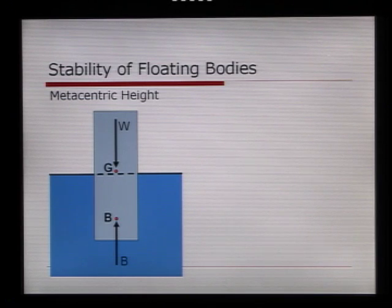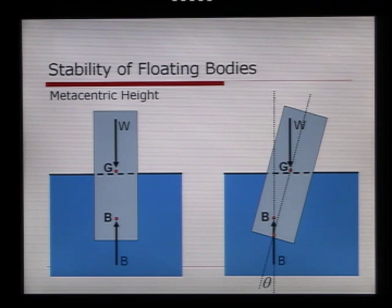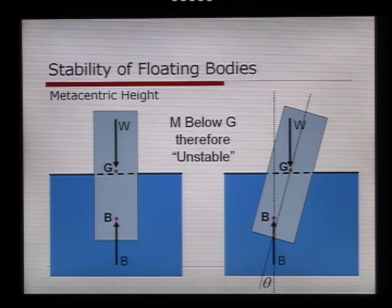Another example would be for this taller object. So, this is like the trawler in the original diagram, where the weight force is acting down, is quite central, and the buoyancy force is quite low. By turning this through an arbitrary angle, we can find that the metacentre is below the centre of gravity, and therefore, it is inherently unstable.